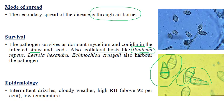The favorable environmental conditions (epidemiology) for rice blast include intermittent light drizzles, cloudy weather, relative humidity of 90 to 92 percent (sometimes up to 95%), and low temperatures of 12 to 15 degrees centigrade or less than 18 degrees centigrade, which are most favorable for growth and germination of the pathogen.